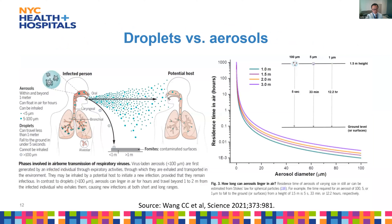It's important to know that the concept of droplet versus airborne is really not dichotomous, and updated understanding of the science shows that many respiratory viruses can be transmitted longer distances through respiratory aerosols. Aerosols and droplets represent a spectrum of sizes of respiratory secretions: larger secretions generally fall within a meter of the source and don't remain suspended, but the smaller the particle, the longer it remains suspended in the air and can potentially travel longer distances.